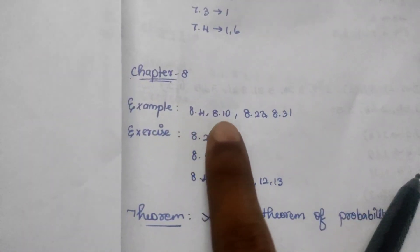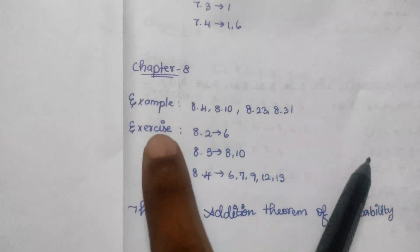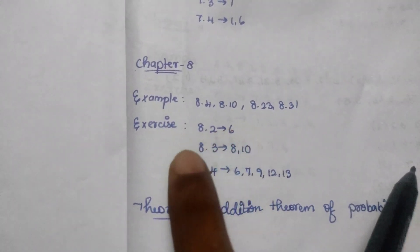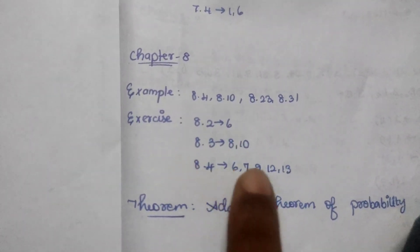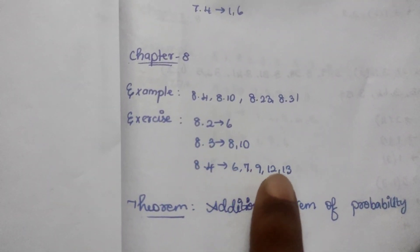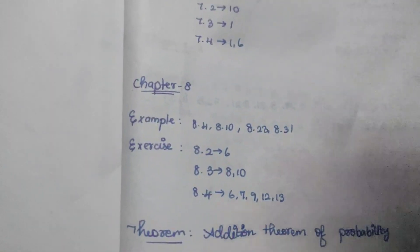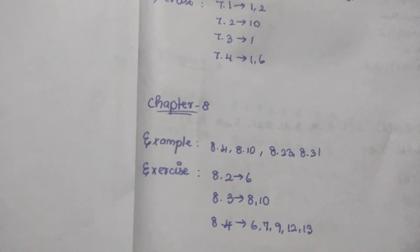Chapter 8: Example 7.4, 8.4, 8.10, 8.23, 8.31. Exercises 8.2, 6.10, 8.3, 8.10, 8.4, 679, 12, 13. This is important to you. This is the past. Thank you.